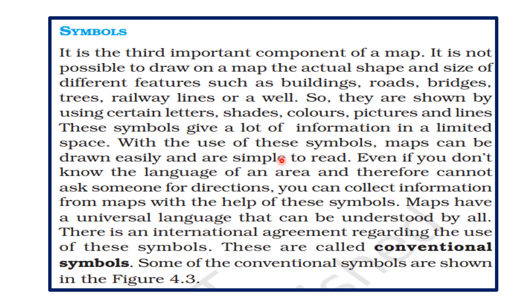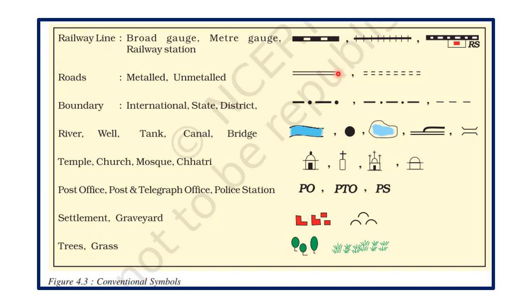In the next figure, we will see some of the important conventional symbols. Railway lines are shown in different ways. This type of railway line shows broad gauge. The distance between two rails is wider than in meter gauge, where the distance gap between the two lines is narrower.